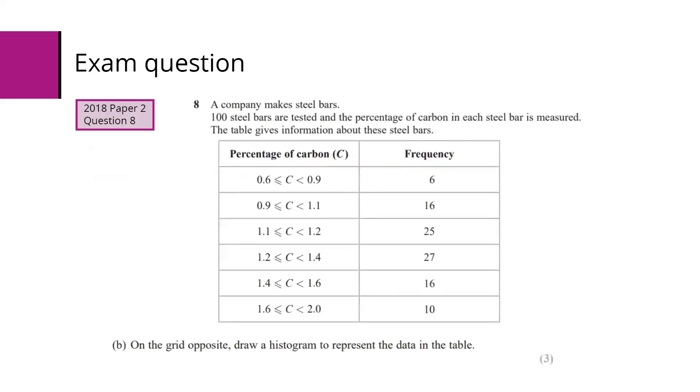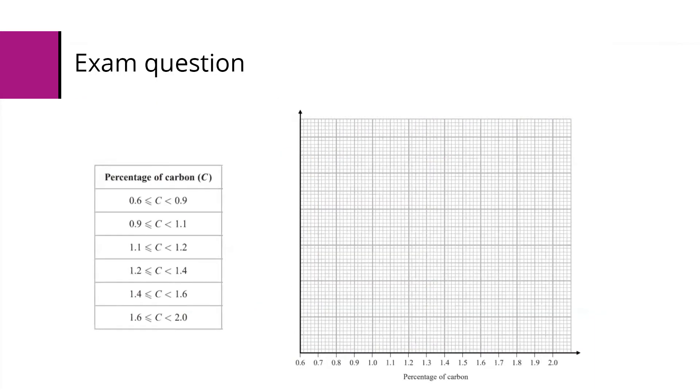Part B of this is the same information, but on the grid opposite, draw a histogram to represent the data in the table. You've got a table looks like that, and a grid with some information provided. The horizontal axis is filled out, but nothing else.